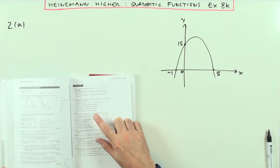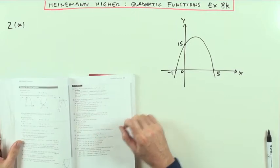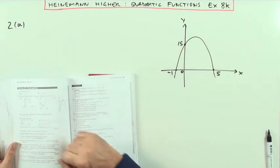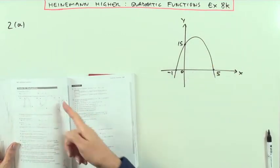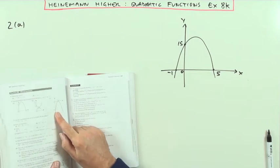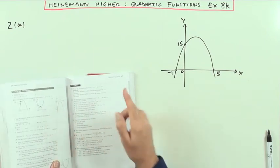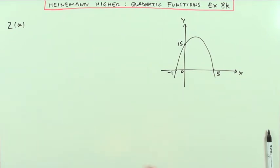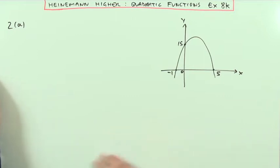Hi, I'm Ben Heyer. Chapter 8 on Quadratic Functions, Exercise 8K, the mixed questions at the end. Question 2: there are 3 graphs and you have to find their equations. They're all quadratics to be expressed in the standard form AX squared plus BX plus C.